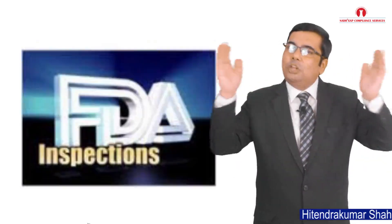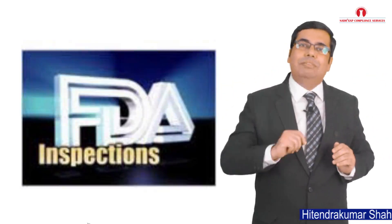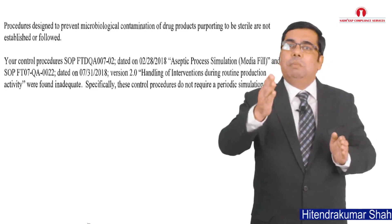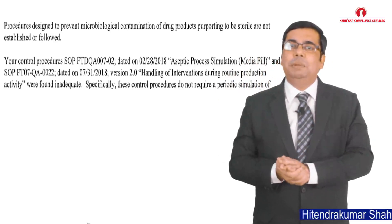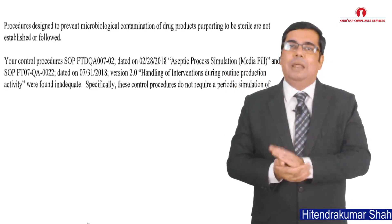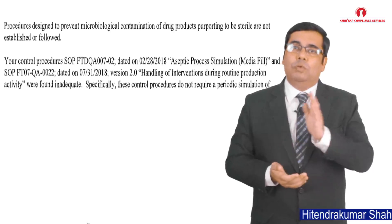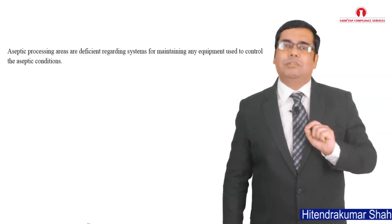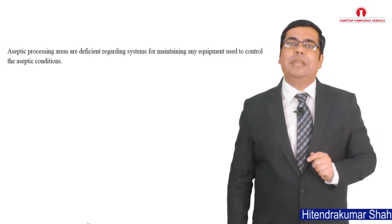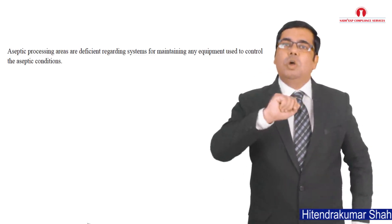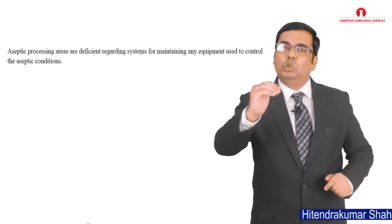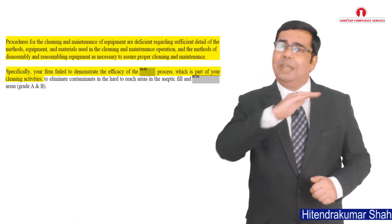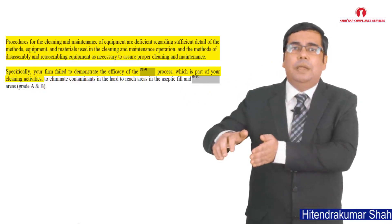As a case study, we referred to many inspectional observations by FDA. We found that many firms received inspectional observations where the inspector raised concern that procedures designed to prevent microbiological contamination of drug products purporting to be sterile are not established or followed. Further, handling of interventions during routine production activity were found inadequate. In another case, the inspector found that aseptic processing areas are deficient regarding systems for maintaining equipment used to control aseptic conditions. In one case, the inspector raised concern that the firm failed to demonstrate elimination of contaminants in the hard-to-reach area in the aseptic field.